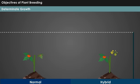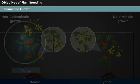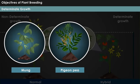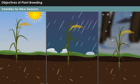Determinate growth: Practicing the habit of determinate growth in crops such as mung, pigeon pea and cotton varieties is considered desirable for less damage and high yield.